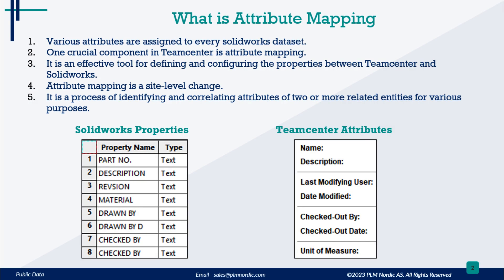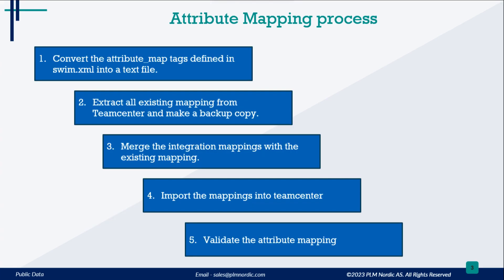What is Attribute Mapping? For every SOLIDWORKS dataset, attributes are given — name, revision, date, etc. — which are needed to map to TeamCenter. Attribute Mapping is one crucial component in TeamCenter, a foundational practice that plays a pivotal role in optimizing data management. It is an effective tool for defining and configuring the properties between TeamCenter and SOLIDWORKS. Attribute Mapping is a site-level change. It is a process of identifying and correlating attributes of two or more related entities, typically for the purpose of data integration, data modeling, data analysis, etc. In the pictures below, you can see SOLIDWORKS properties and TeamCenter attributes. The steps needed for attribute mapping will be seen in detail in the demo.